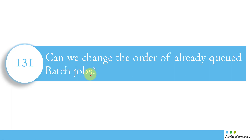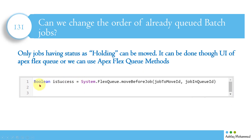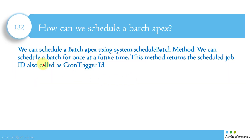Can we change the order of already-queued batch jobs? For example, if job one, two, and three are in the queue, can we run job three before job two? Yes — only jobs with a status of 'Holding' (i.e., those in the flex queue) can be reordered. This can be done through the Apex Flex Queue UI, or programmatically using: Boolean isSuccess = System.FlexQueue.moveBeforeJob(jobToMoveId, secondJobInQueueId).